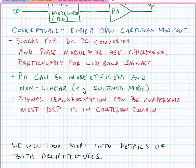Finally we should note that the signal transformation between cartesian and polar can be cumbersome. Most DSPs work in the cartesian domain which means that we have to do the transformation from cartesian to polar which results in wideband signals and results in the use of something that's called a CORDIC which is a coordinate rotation digital integrated computer.